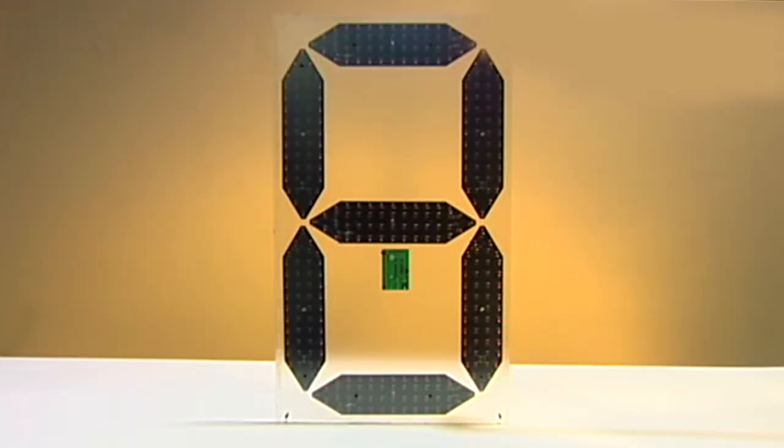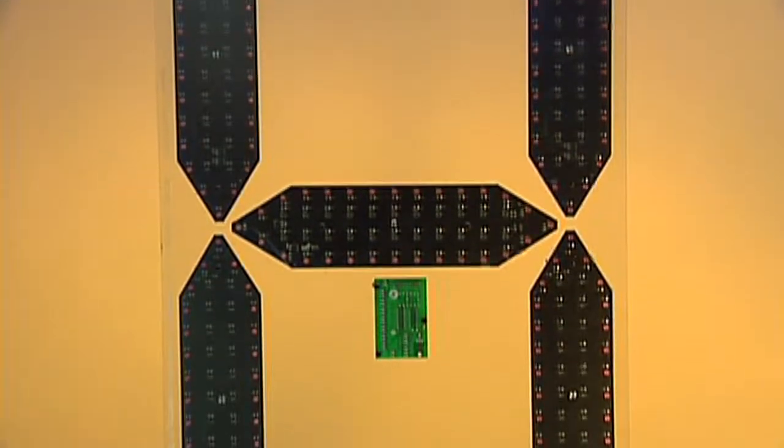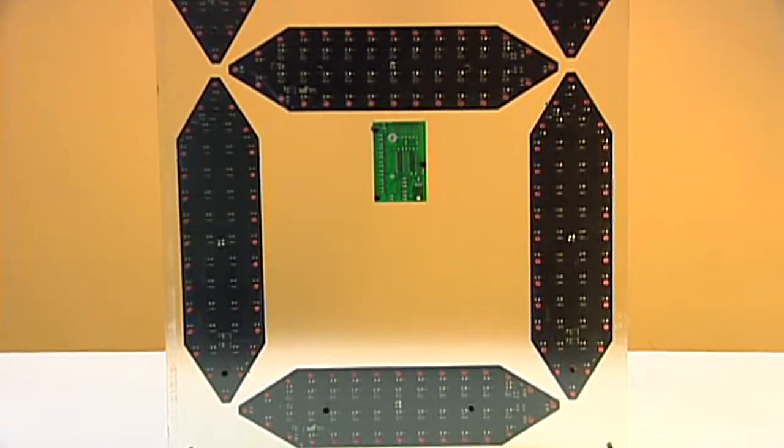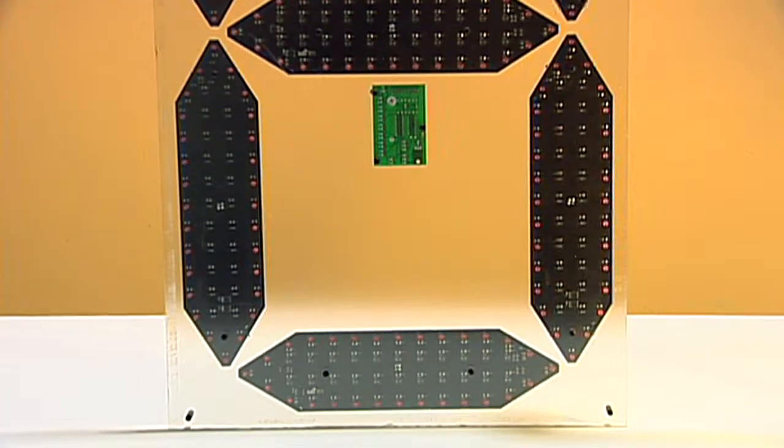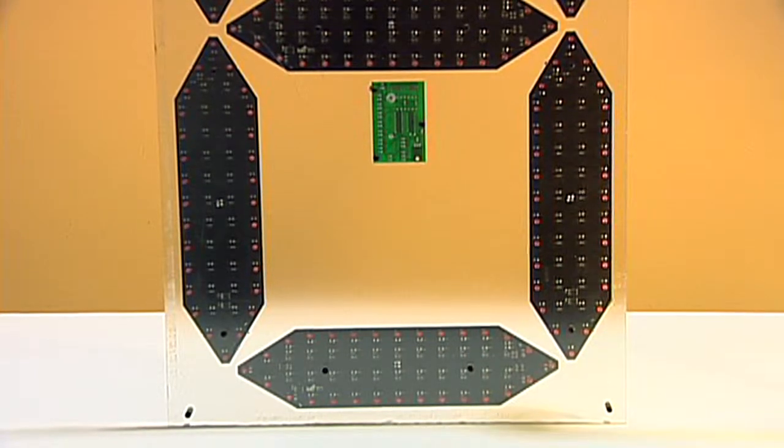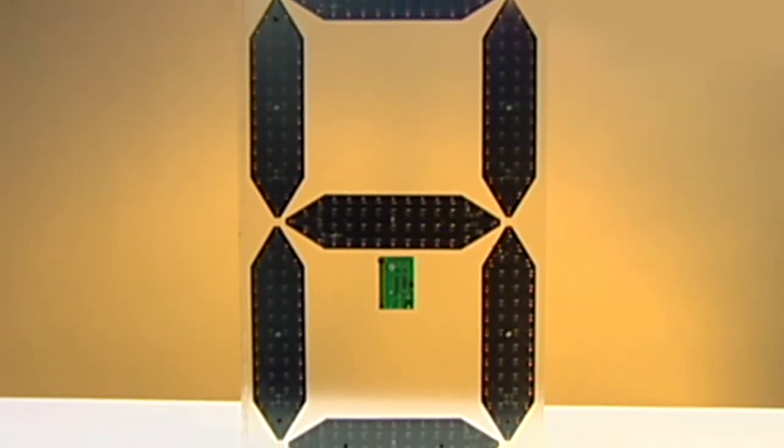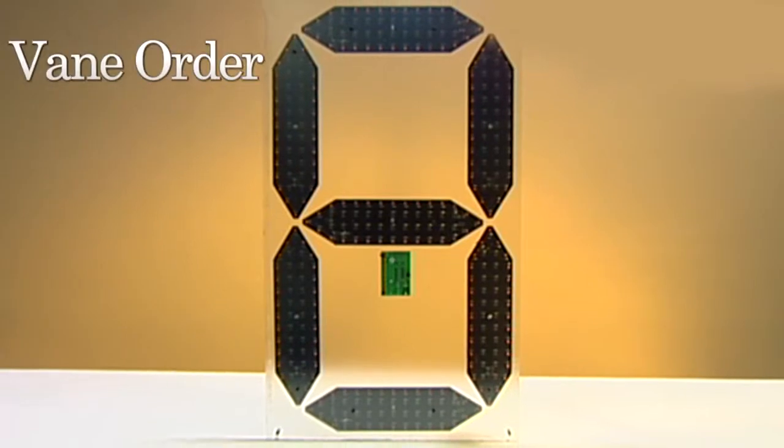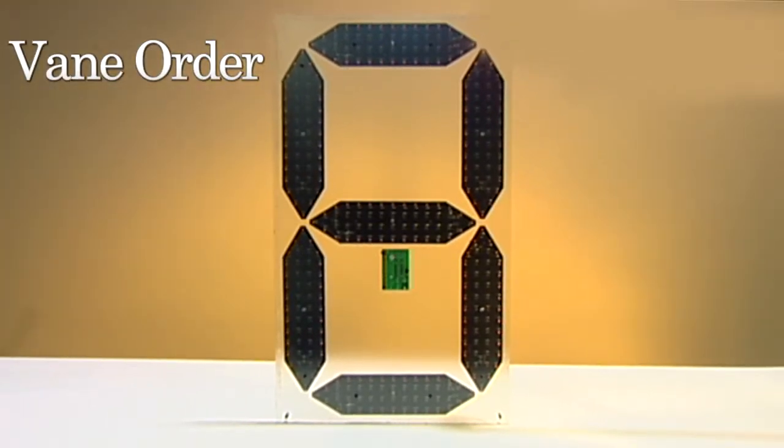On an LED vane digit, there are seven vanes which make up a single digit. The vanes on a digit are assigned a letter to ensure correct connection with the vane driver board. Facing the front of the scoreboard and starting at the top vane on the digit, this vane is called the A vane. Going clockwise around the digit, the next vane is labeled B.